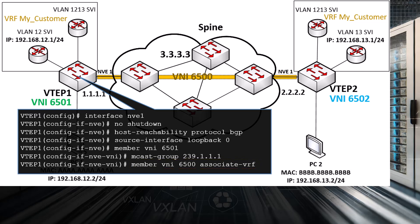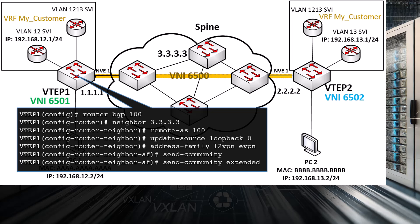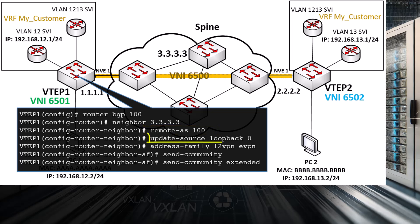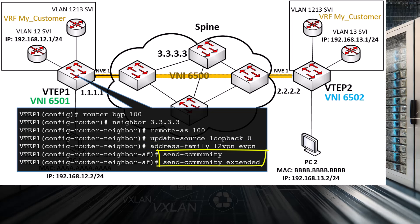Now we configure the MPBGP settings for VTEP1, in much the same way as we did with our Layer 2 VNI deployment. We specify the neighbor IP (our spine), the remote AS — which is the same as our own, meaning we're using IBGP — and configure loopback 0 as our BGP source interface. We then configure our address family as L2VPN EVPN to share MAC addresses, and enable BGP extended communities.